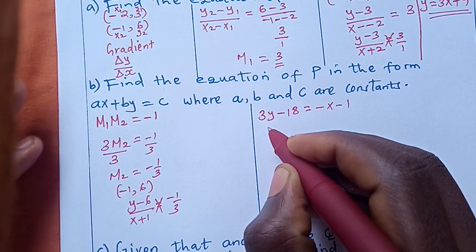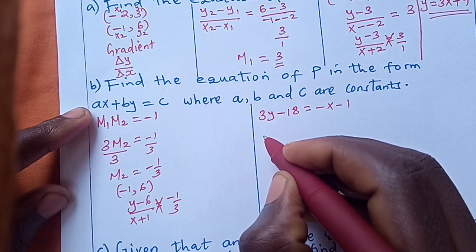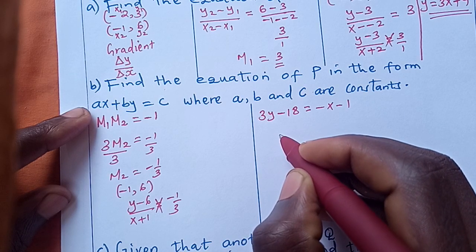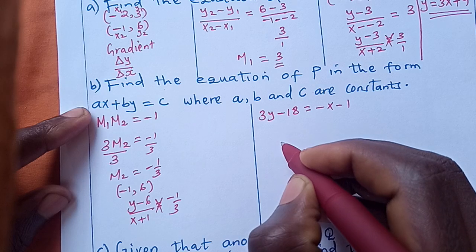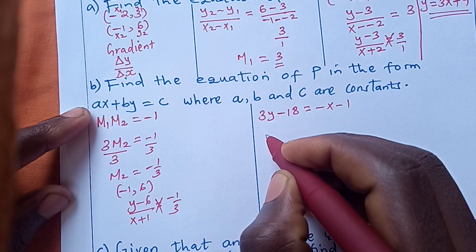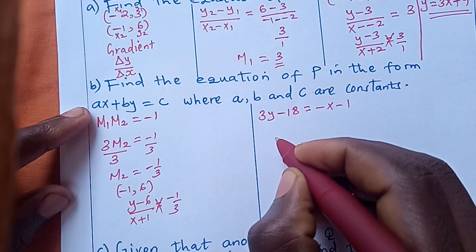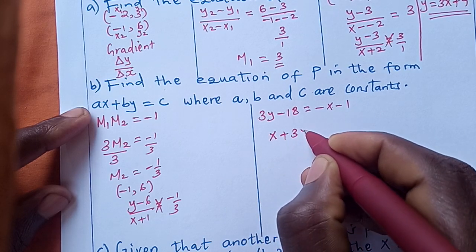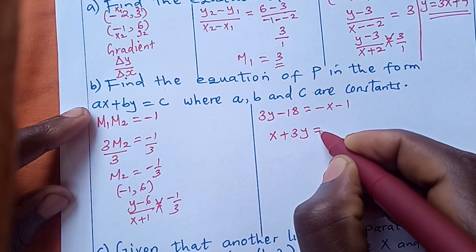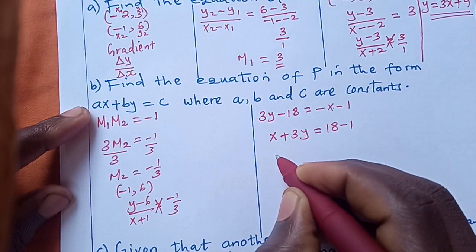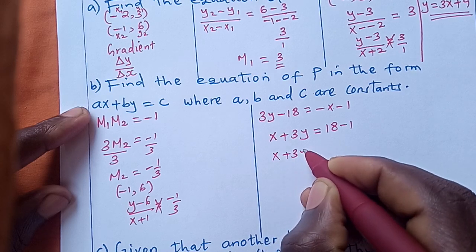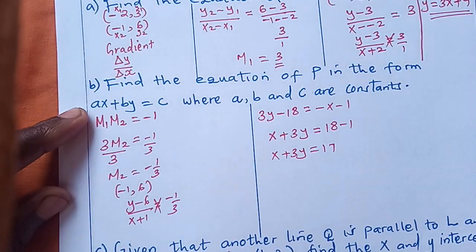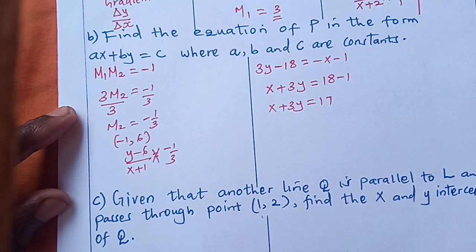Our final answer must follow the form ax + by = c. So we bring x to the left-hand side: x + 3y = 18 - 1, giving x + 3y = 17. This is the equation for line P.